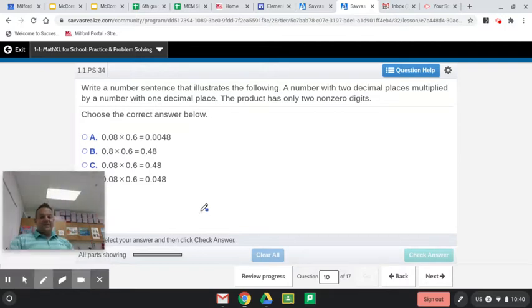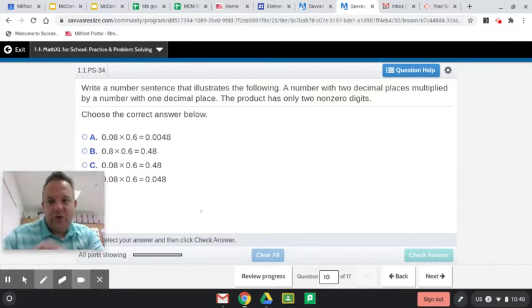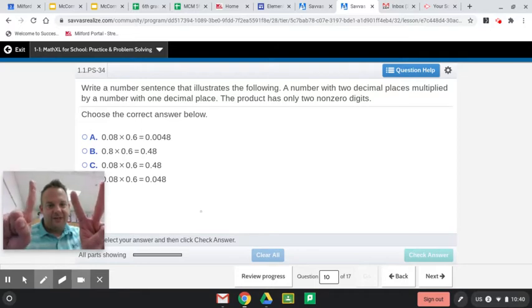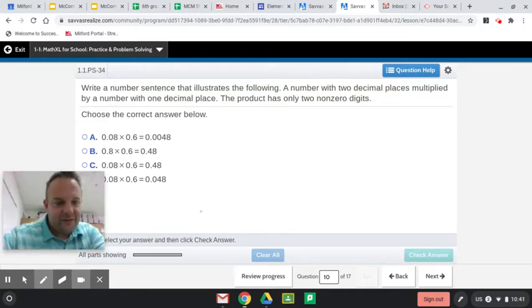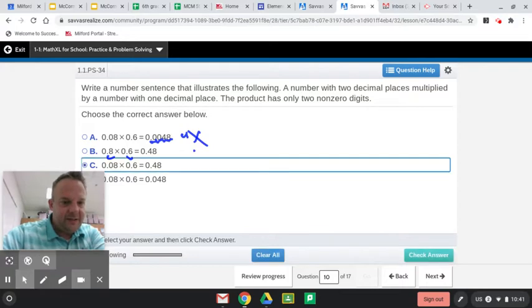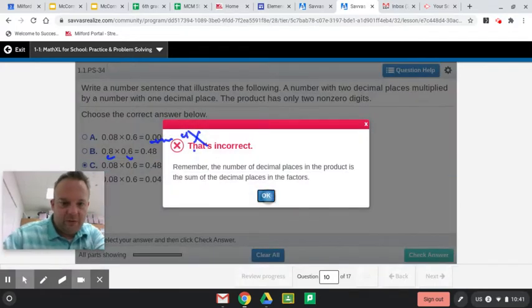Write a number sentence that illustrates the following. A number with 2 decimal places multiplied by a number with 1 decimal place. The following product has only 2 non-zero digits. Okay. So we have 2 decimal places multiplied with 1 decimal place. We'll have 3 decimal places. So if you look here at this one, 2 plus 1 is 3. But look, they have 1, 2, 3, 4. So not that. And now I'm checking out B. 1 place and 1 place equals 2 places. But they wanted 2 and 1. So that would be C.